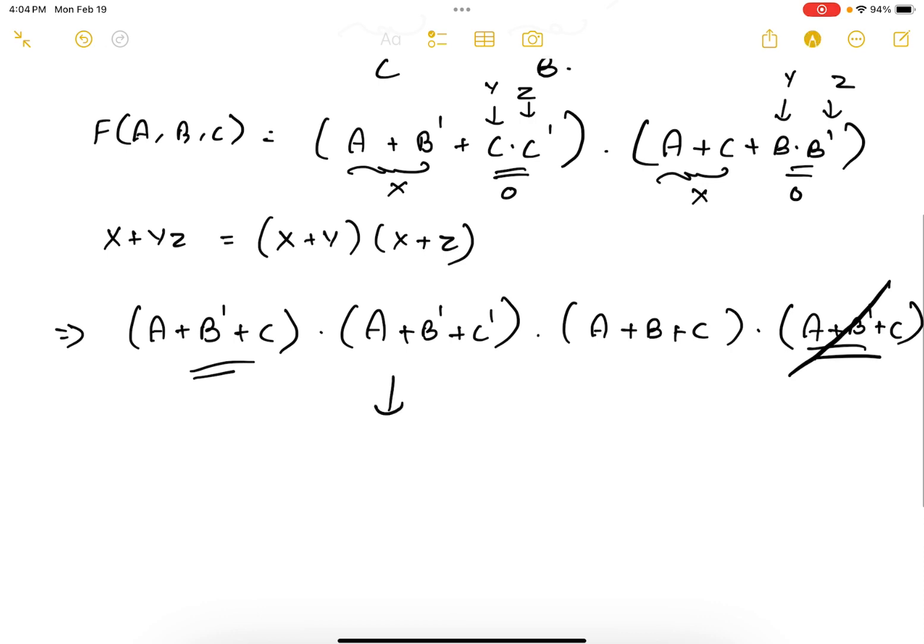This is said to be in the canonical POS form. So in the canonical POS, each term should have all the three terms or all the three parameters. So this one has a, b, and c, this one has a, b, and c, this one has a, b, and c.